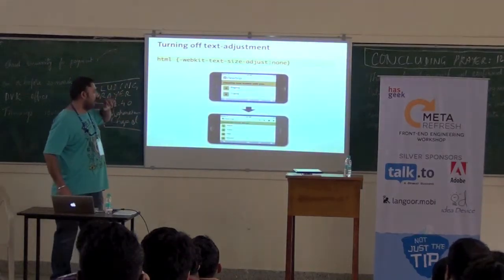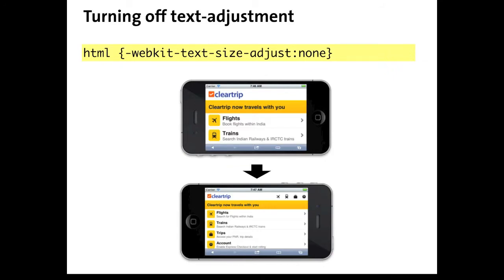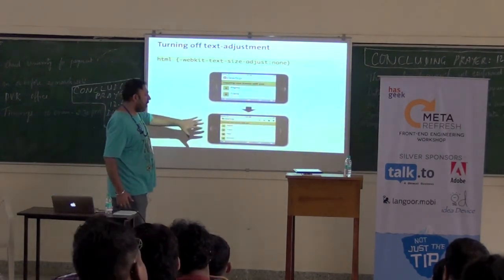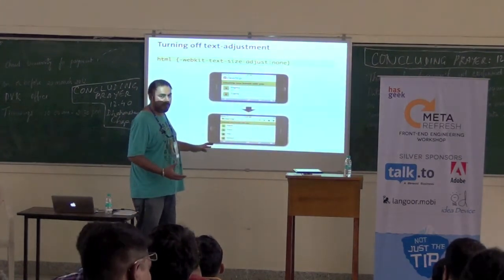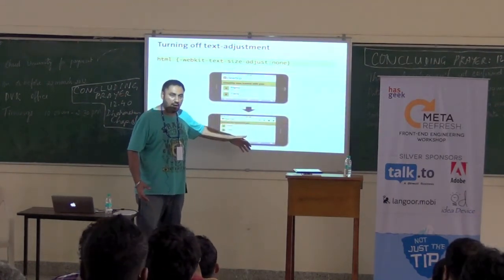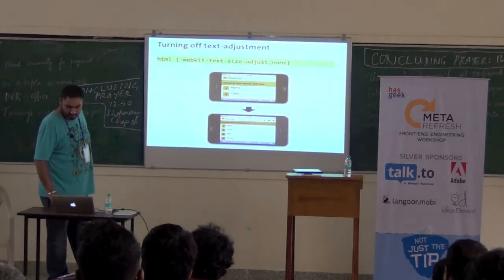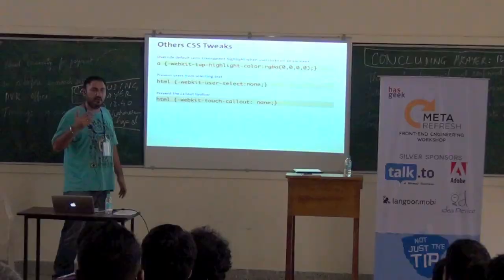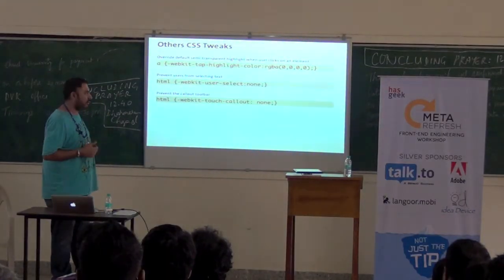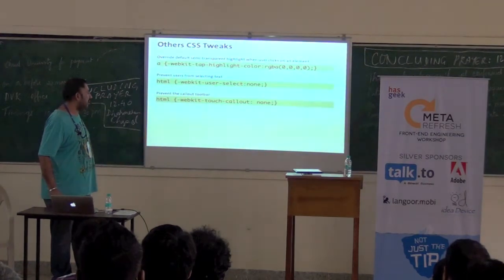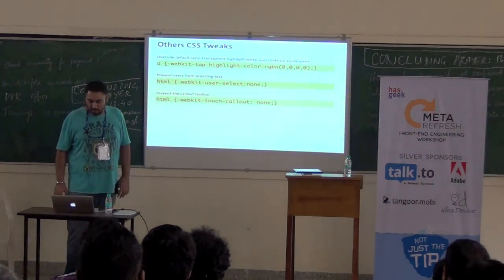Some other handy CSS tweaks: by default, Safari adjusts font size when you rotate your phone. You can disable that, which lets you do more customization in landscape mode — for example, showing more content. You can also disable the semi-transparent grey highlight that shows up when you tap on something, and prevent users from selecting text. These small things round out the mobile experience.